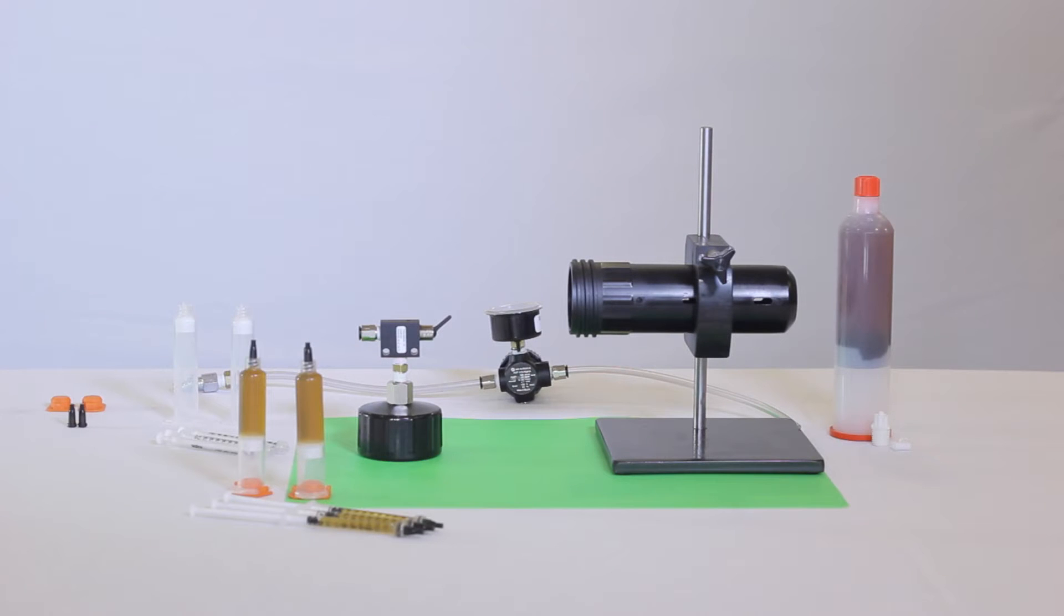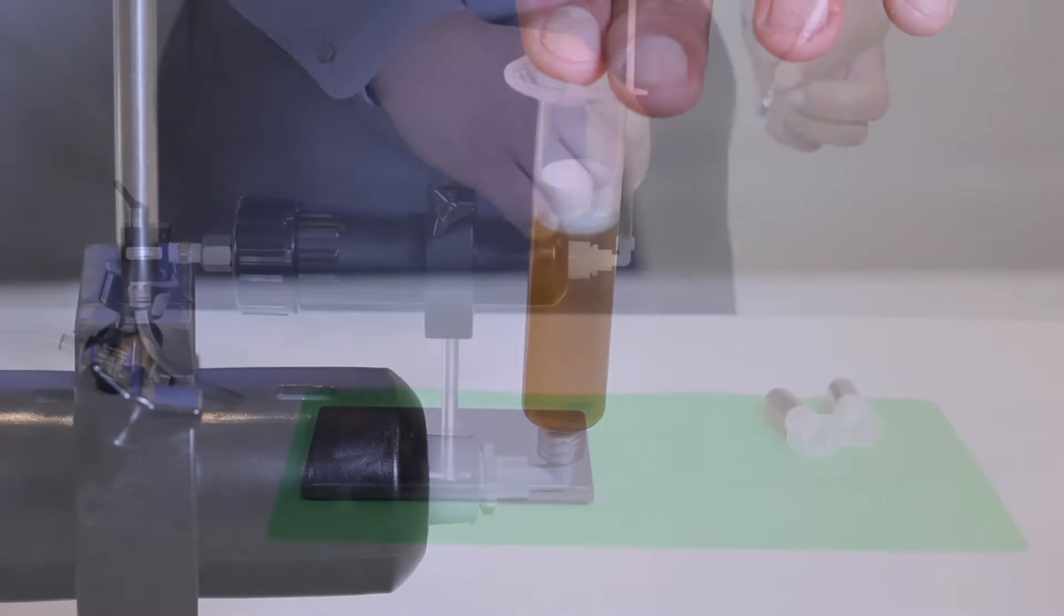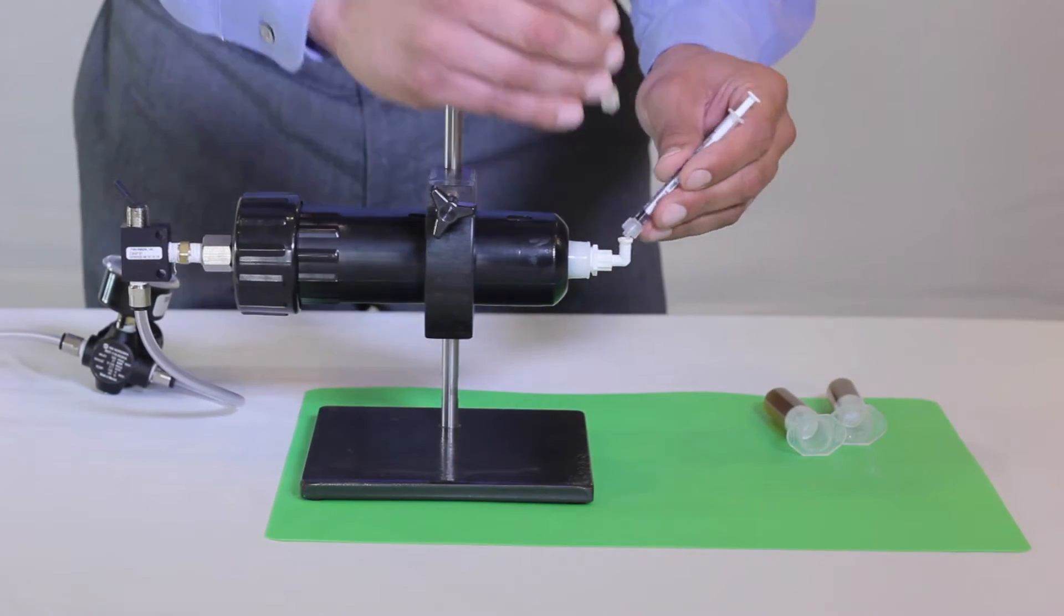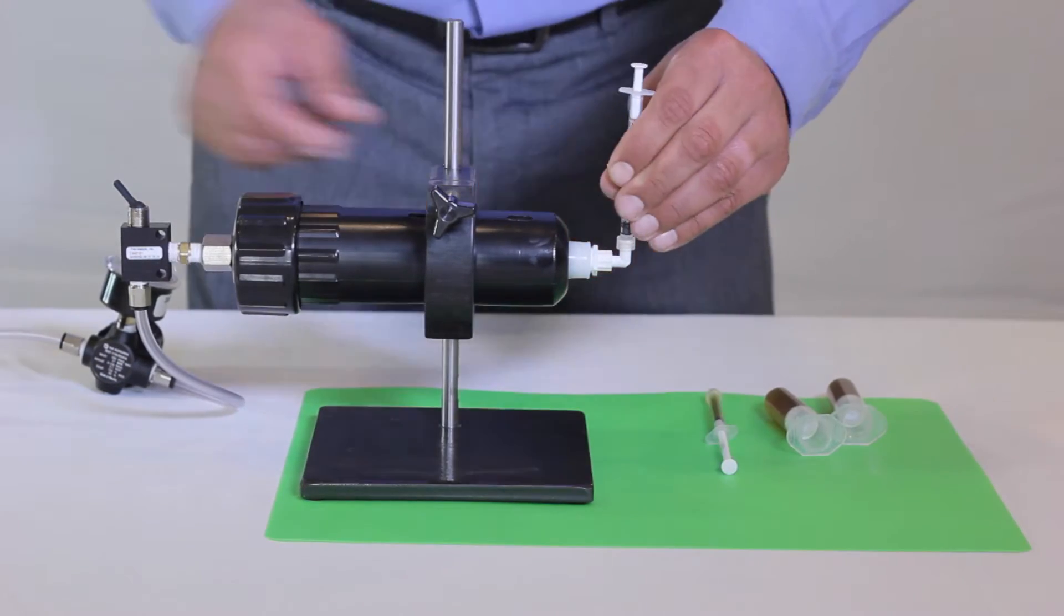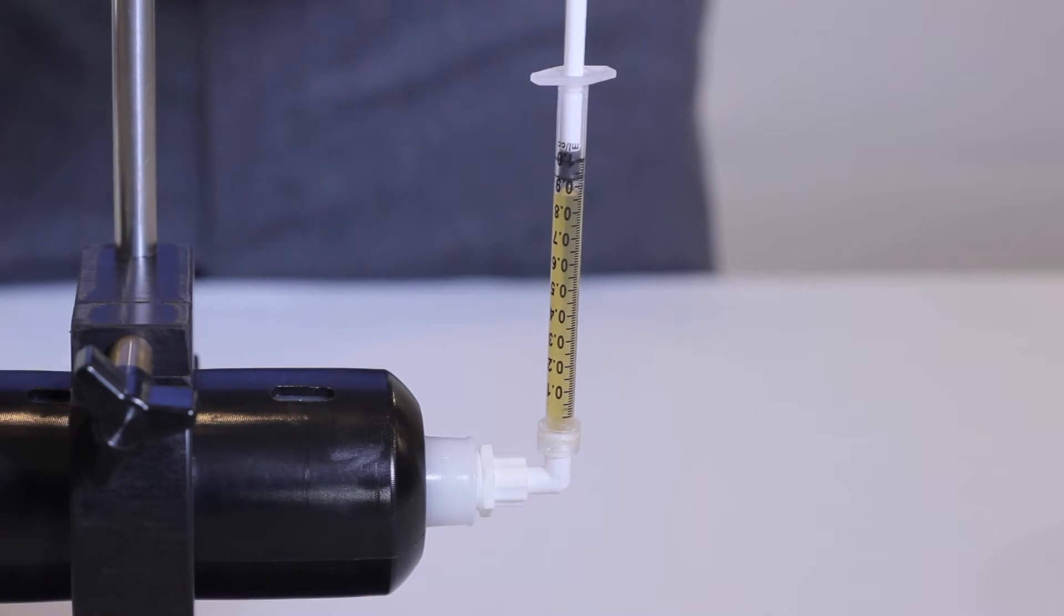In this video we will be featuring the Jensen Global Syringe Filling System. This unit is designed for quick filling of several air and manual syringes. It is an easy to use pneumatic system that provides ergonomic relief while increasing accuracy and production over manual filling.